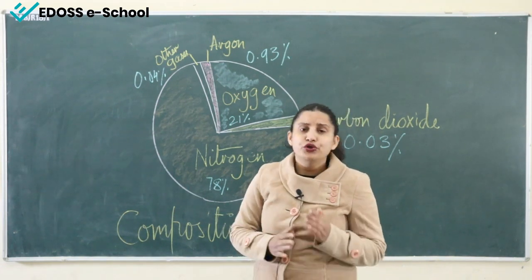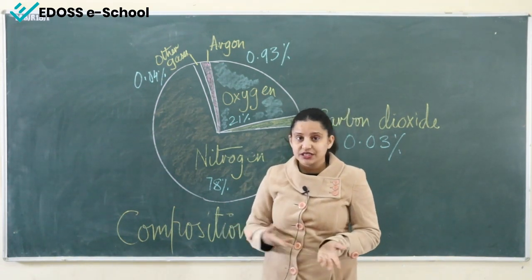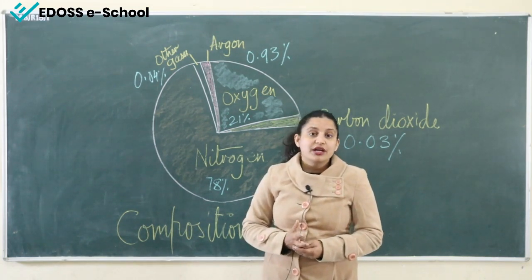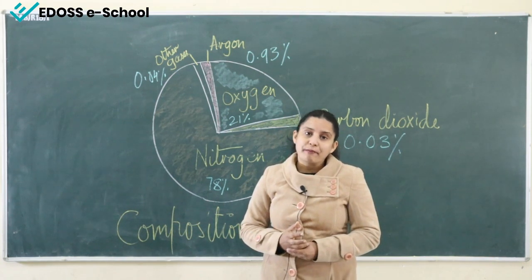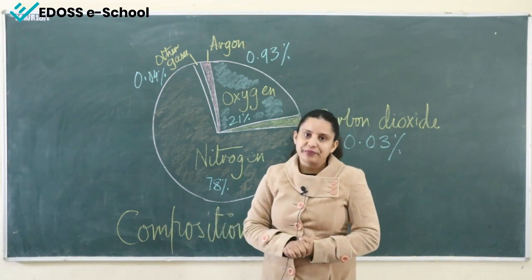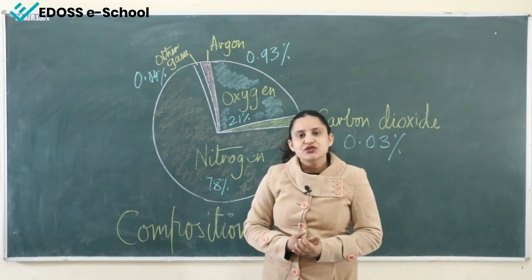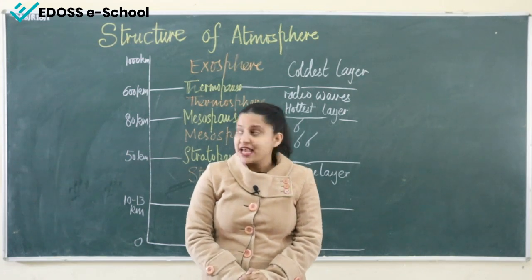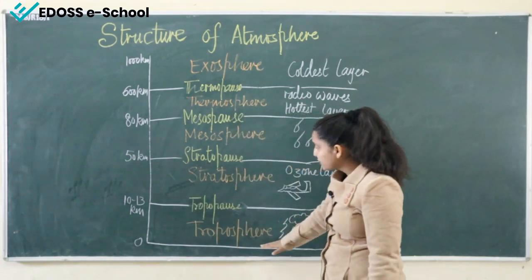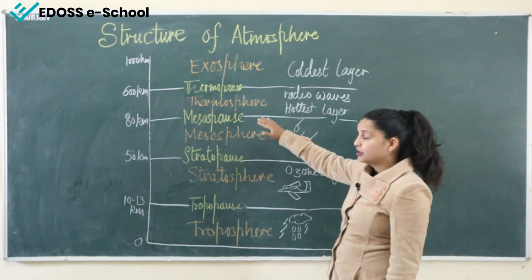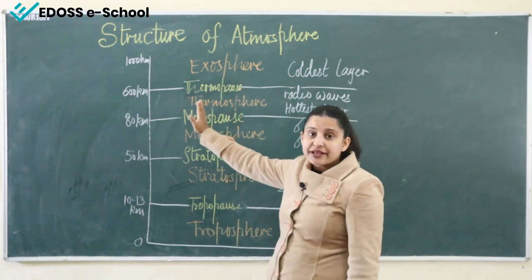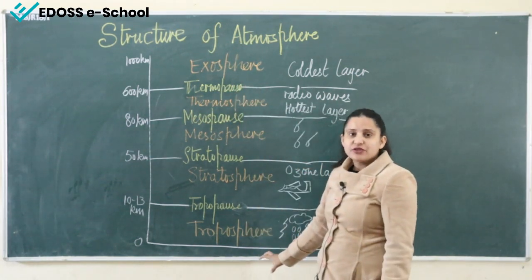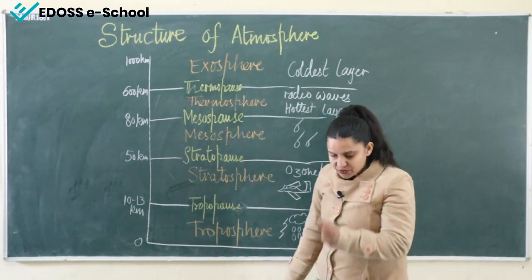This topic is very important not only for students in classes 6 to 10, but also for students preparing for competitive exams. Let's learn about the layers of atmosphere. Our atmosphere is divided into five layers: troposphere, stratosphere, mesosphere, thermosphere, and the last one is exosphere, which is the topmost layer. The troposphere is the layer closest to earth.